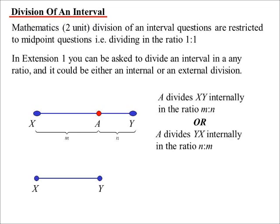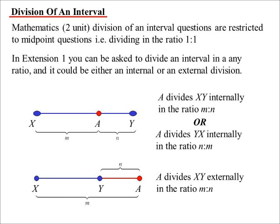We can also have an external division. Because whilst we're talking about an interval, an interval, of course, is a piece of a line. So, there's no reason why we couldn't put that point a outside of x, y on the line. And that's what we call an external division. And again, the naming of the line is important. So, a to x would be m parts, a to y would be n parts. And clearly, for this particular one, m would be a bigger number than n.